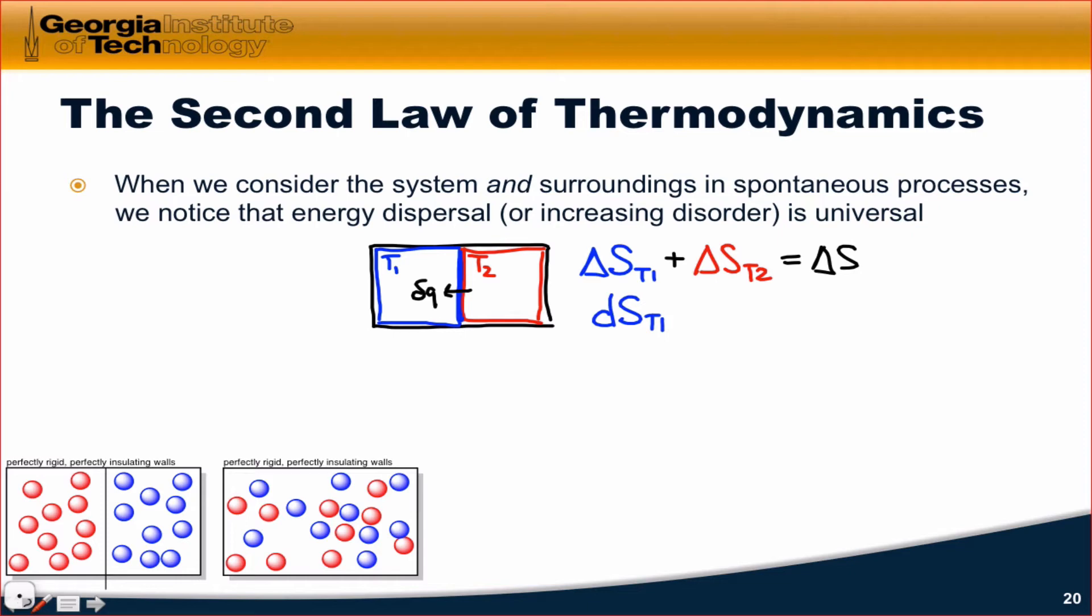So dS_T1, a very small change in entropy within T1, plus dS for T2, a very small entropy change in the T2 block, is equal to the total infinitesimal change in energy, dS.